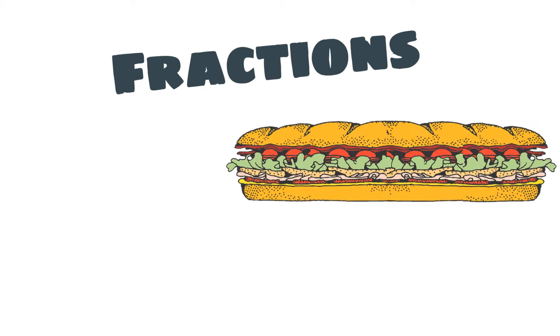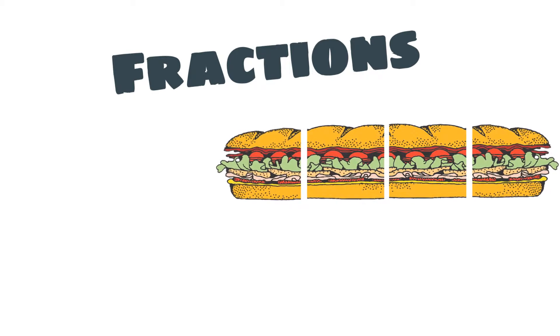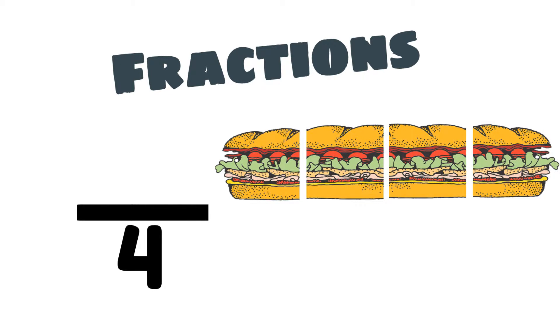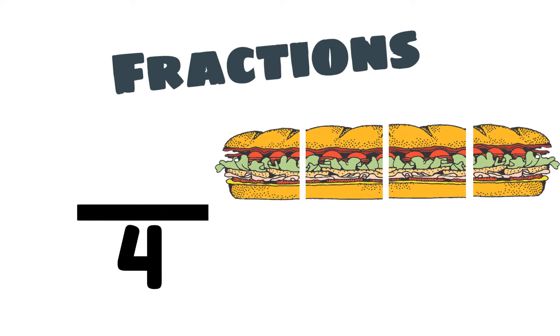Let's look at another example. Here we have a sandwich that has been cut into four equal parts. That means the denominator will be four. Each one of the equal parts is one-fourth, or one-quarter.